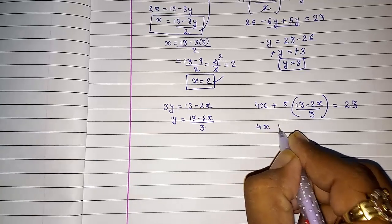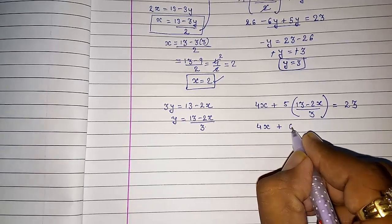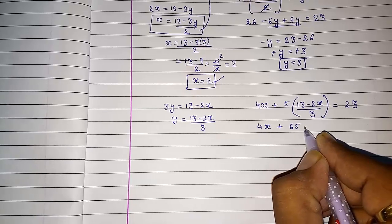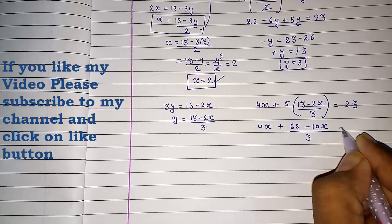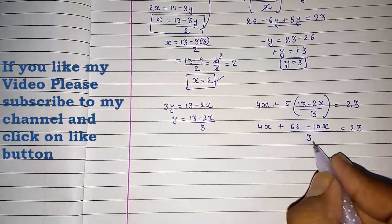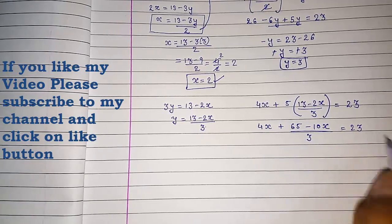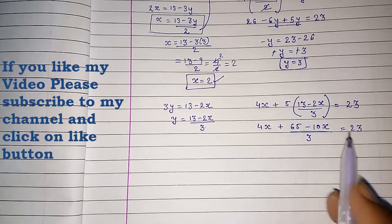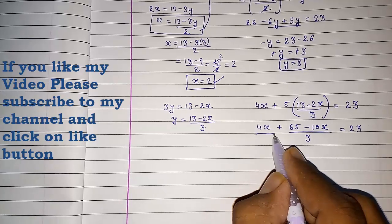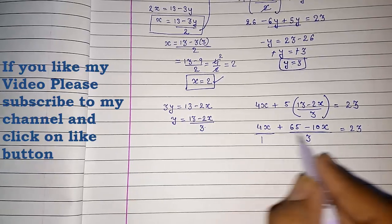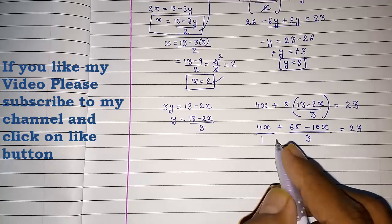What we have to do first is multiply this 5 with these two terms: 4x + 5(13 - 2x)/3 = 4x + (65 - 10x) / 3 = 23. They are taking this 3 directly, but we cannot take this 3 because it's not in the whole denominator. First we have to make the denominators the same.